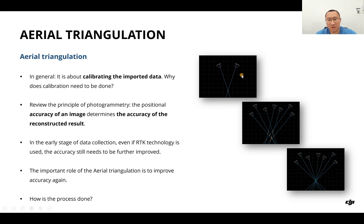For example, as we talked about in the last course, we can use two images to determine a ground object's position. But the ground object might be captured by lots of pictures, so there might be lots of positions calculated. The important role of aerial triangulation is to improve the accuracy again.